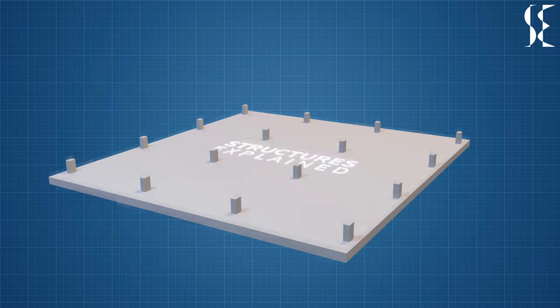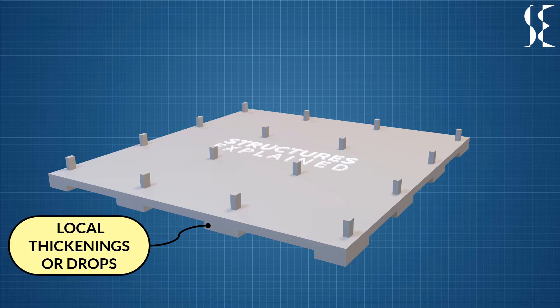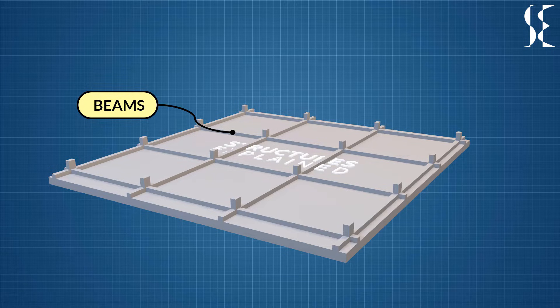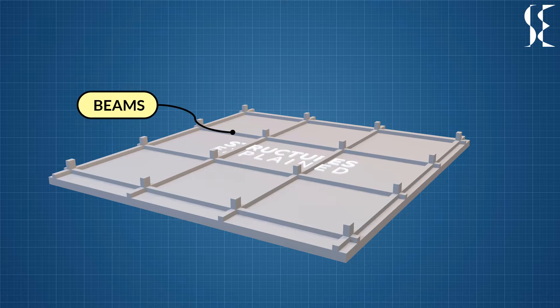Rafts can have local thickenings or drops below columns. These thickenings are provided if the thickness of the raft is insufficient to bear shear and bending stresses. Rafts can also have beam embedded in them from column to column. These beams can be below, above or hidden in the raft as per design requirements. These beams provide stiffness to the raft. This type of raft foundation is typically used when column loads are unequally distributed.